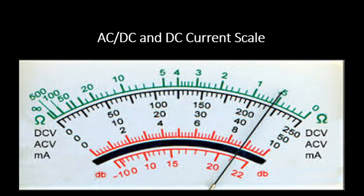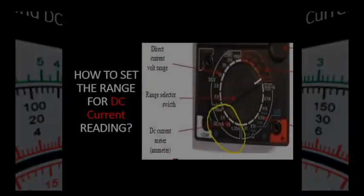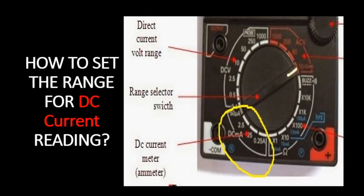In the yellow circle is the range for DC ampere or current. It's only used for small values of DC current.